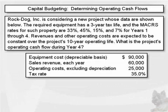Rock Dog Inc. is considering a new project whose data are shown below. The required equipment has a 3-year tax life and the MACRS rates for such property are 33%, 45%, 15%, and 7% for years 1 through 4. Revenues and other operating costs are expected to be constant over the project's 10-year operating life. What is the project's operating cash flow during year 4?